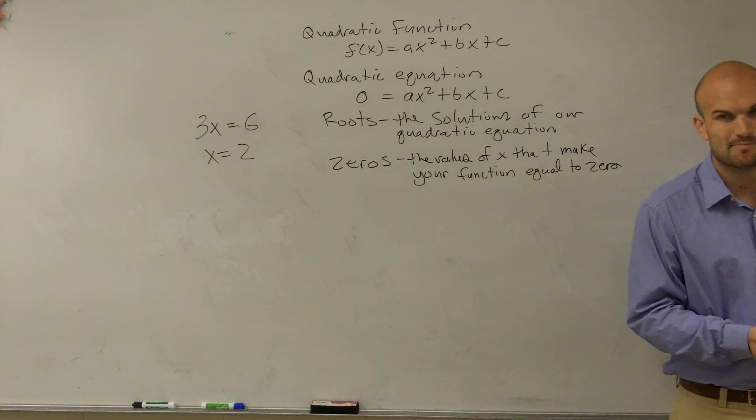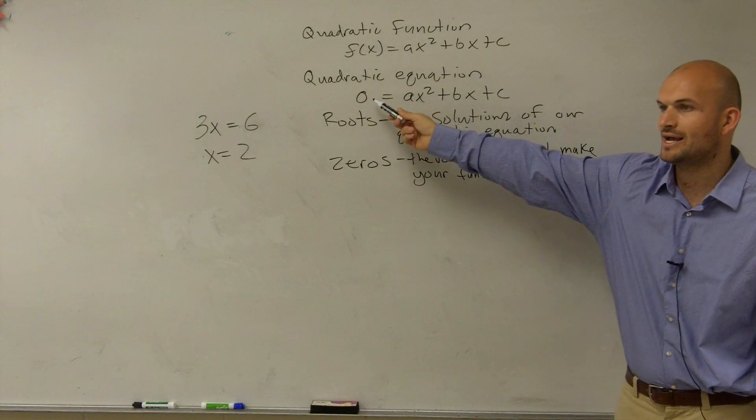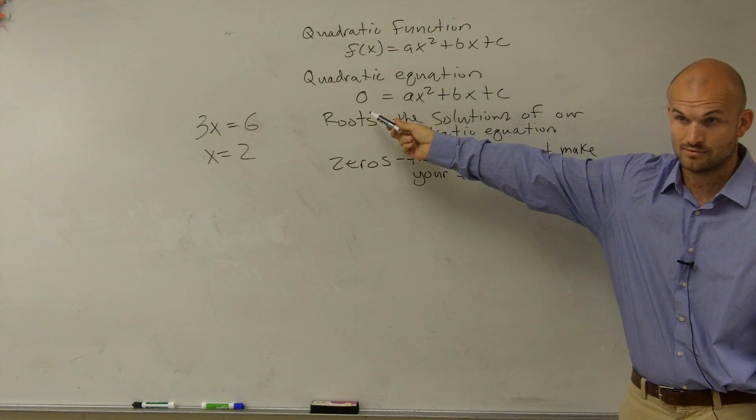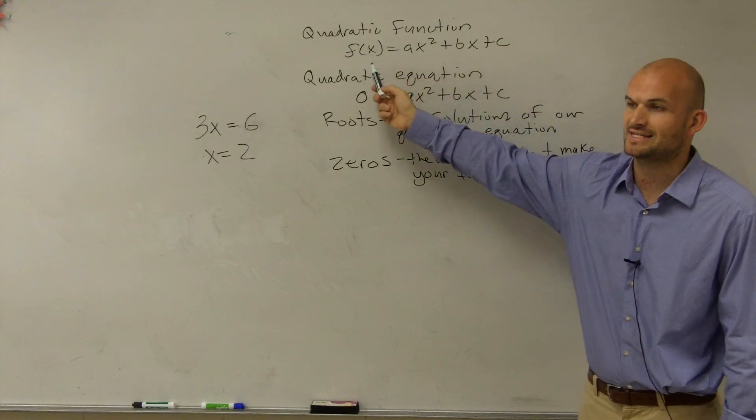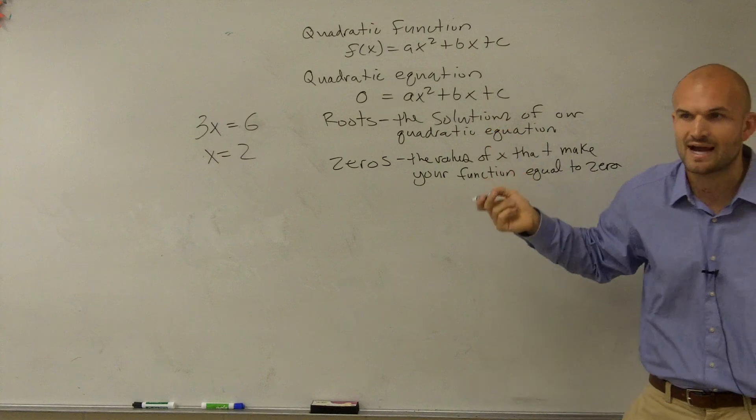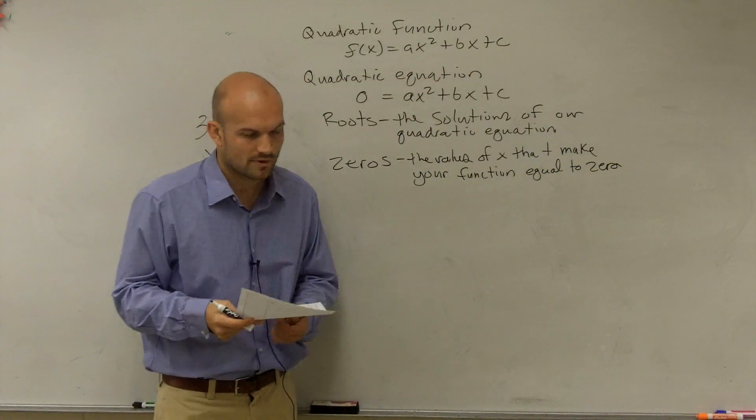But really, it's the basics of the same thing. We're trying to find the values of x that either make my quadratic equation equal to 0, true, or if I have it as a function, we're going to set my f(x) equal to 0, and then we're going to find those values, which we call the zeros. So, it's pretty much the same thing, just kind of depends on what we're going to start with.